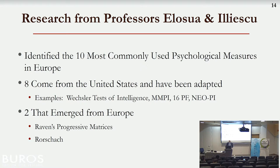To give a sense of the extent to which tests are translated: two colleagues, Paula Elosua and Dragos Iliescu, published survey results of the ten most commonly used psychological measures in Europe. Eight of them come from the United States in translation. The two that didn't — that came from Europe — were the Raven's Progressive Matrices, a mostly nonverbal test, and the Rorschach, also a nonverbal test. This shows how much tests are currently being adapted into different cultures and languages.